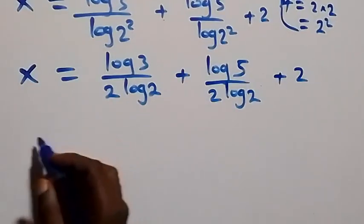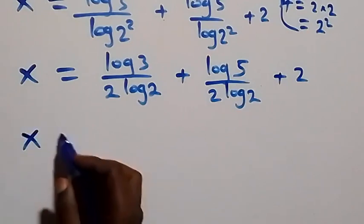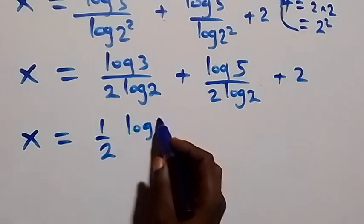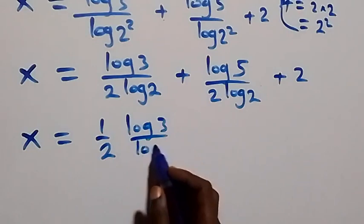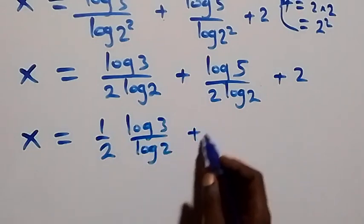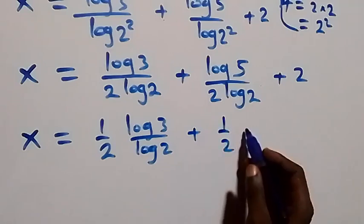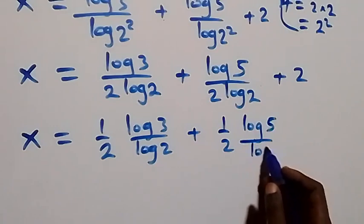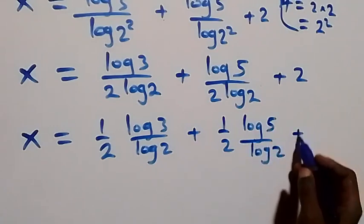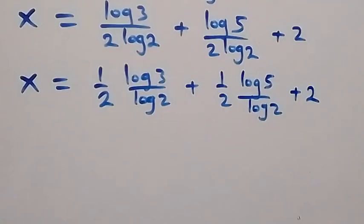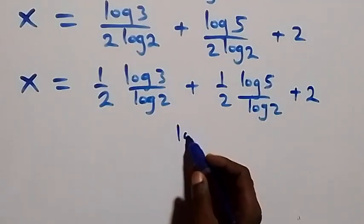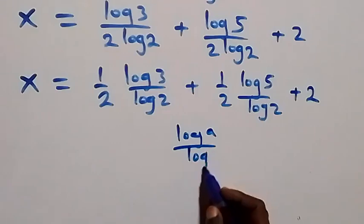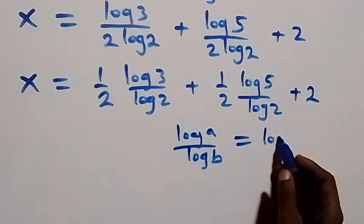From here, using change of base, we can write this and separate it as x equals to one half times log 3 over log 2, plus log 5 over log 2, plus 2. From here, using change of base — when we have log a over log b, this can be written as log a to base b.